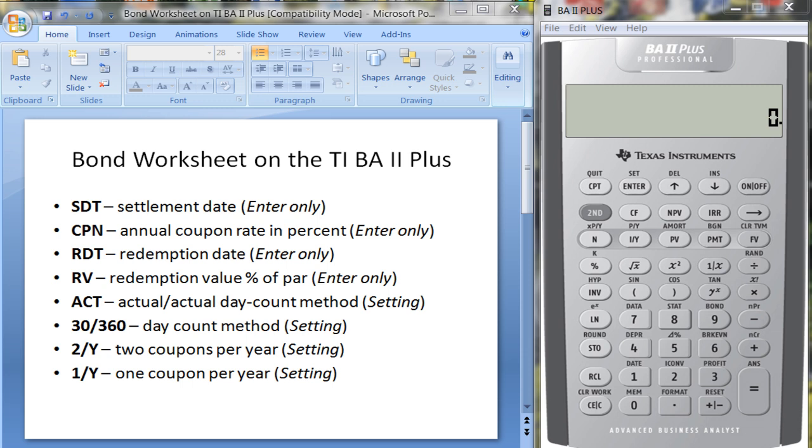Let's take a look at the bond worksheet on the TI BA II Plus calculator. This can be quite handy for calculating bond prices, yields, and particularly duration, which is a fairly tedious calculation.